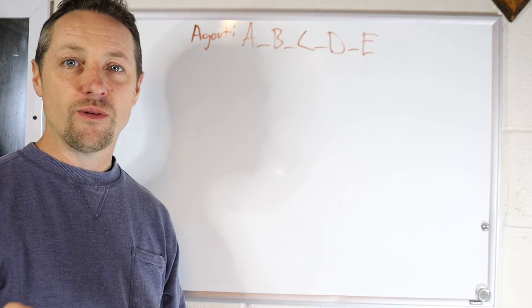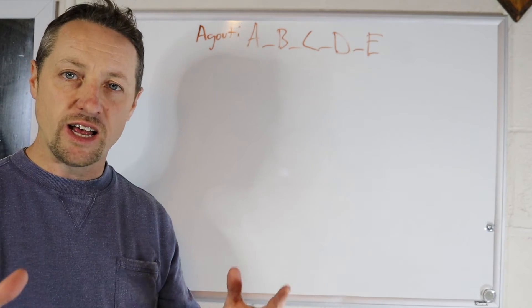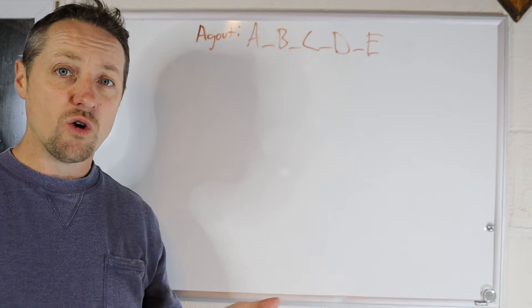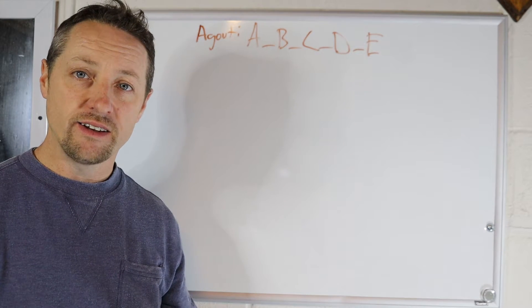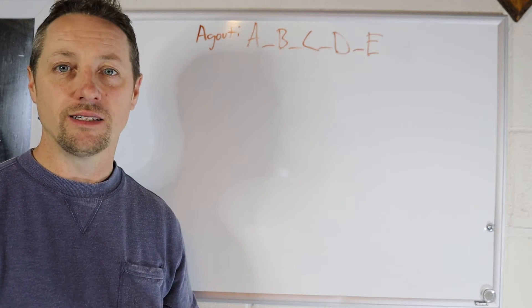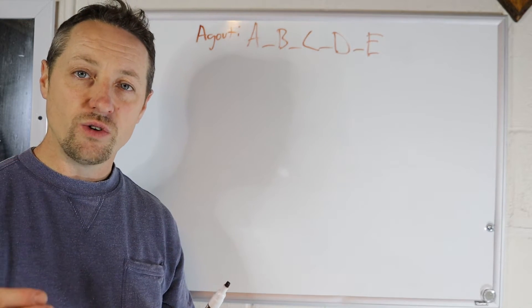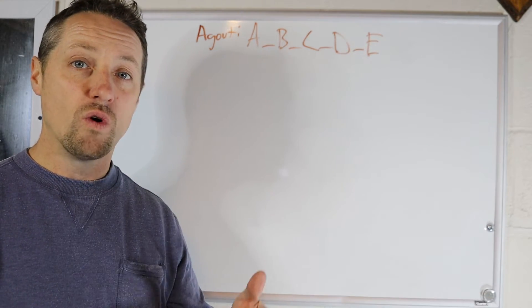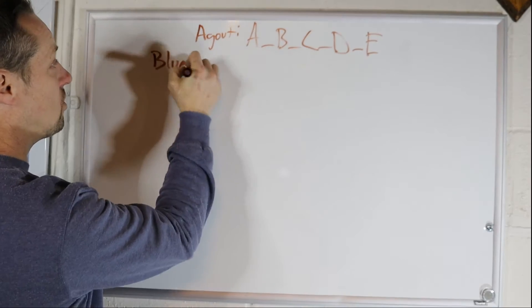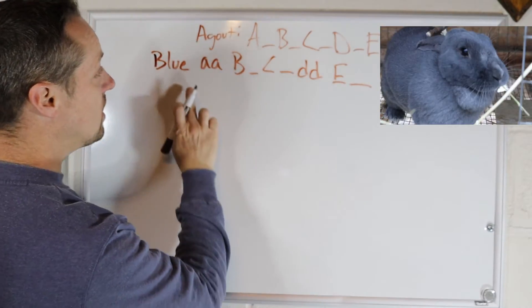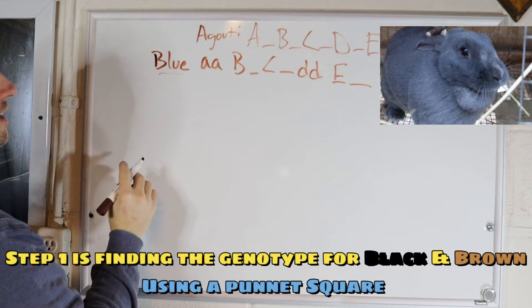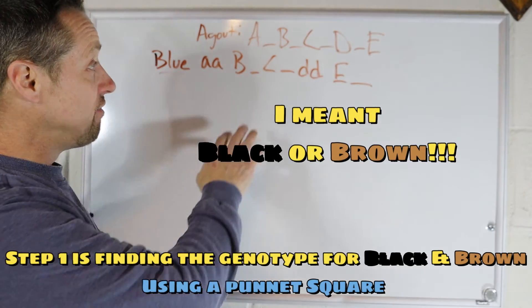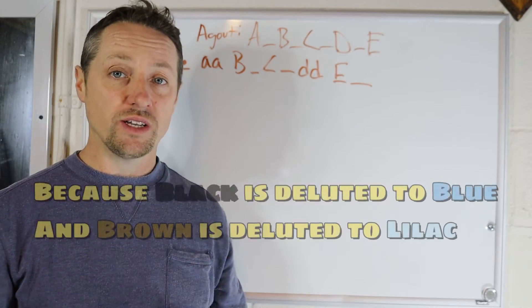So let's write down blue rabbits is going to have the self and the A locus and it's also going to have the dilute. Now, the A locus is going to be either agouti, tan or self, which basically means like a solid. And then the dilute is always going to be either dense, which is normal, or dilute meaning like black to blue or brown to lilac. That's a genotype for a blue rabbit. In most cases, you're finding out the black base or blue base first and you're then going to find out your dense or dilute second.